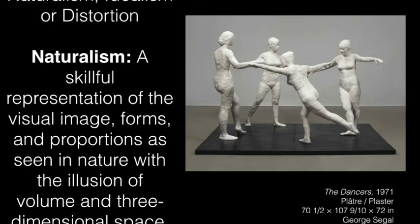Naturalism, idealism, or distortion. Naturalism is a skillful representation of visual images, forms, and proportions as seen in nature with the illusion of volume and three-dimensional space. On the right, we see The Dancers by George Segal. The way these pieces were made: Segal would bring in live models, have them strike a pose, and cast them with plaster bandages — similar to materials used for a broken arm cast. These bandages take an exact replica of the person's body. The results are fleshy, chunky, and sloppy looking, but they're exactly as these bodies were — showing the real nature of what these people looked like.